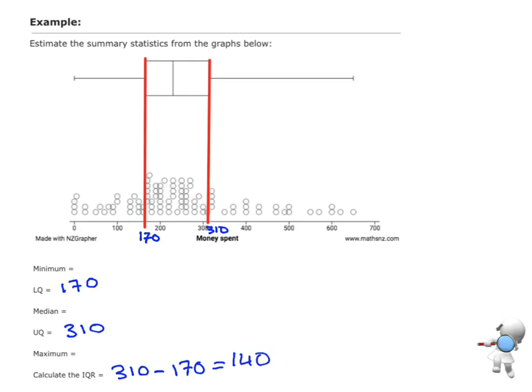Now let's have a look at estimating some other values. The bottom value down there, that is our minimum, and up the top there, that value at the top is our maximum, and this line here in the middle is our median. Let's see if we can estimate those.